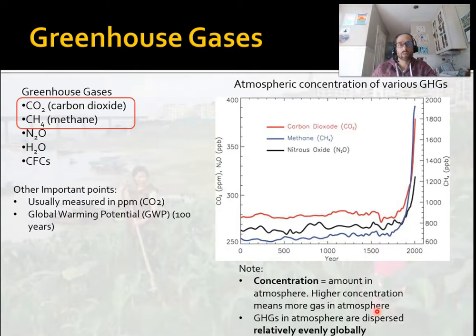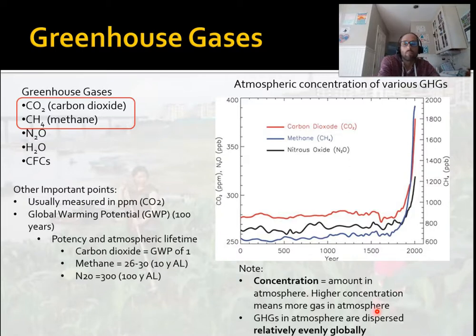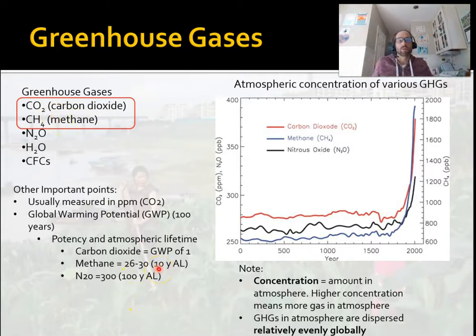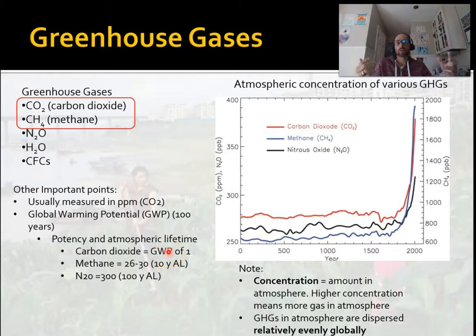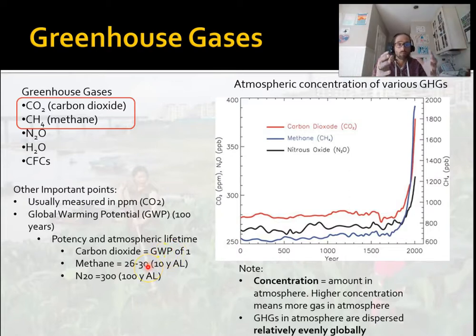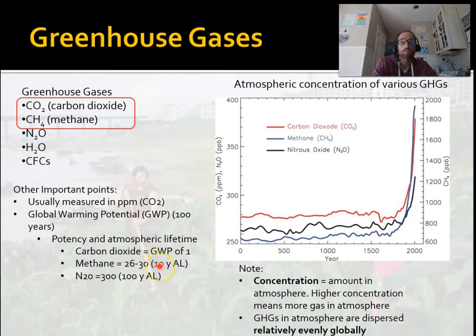CO2 is measured in parts per million, while methane is measured differently. Regarding global warming potential: methane is about 30 times as powerful as CO2. What that means is that one ton of methane emissions will warm the climate about 30 times as much as one ton of CO2 over 100 years. CO2 is your base level — global warming potential of 1. Methane is about 30. And actually all our greenhouse gases have global warming potentials above 1 — some like CFCs in refrigeration units have potentials in the thousands.